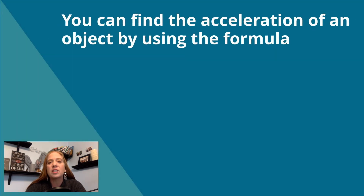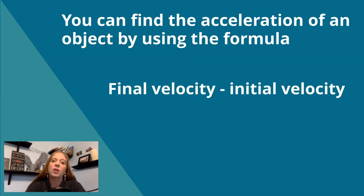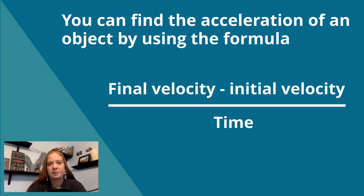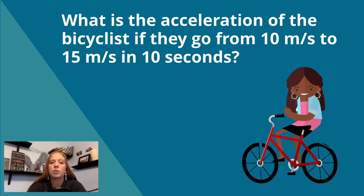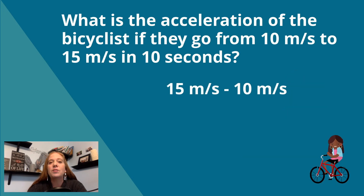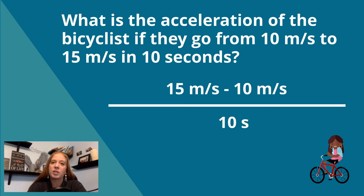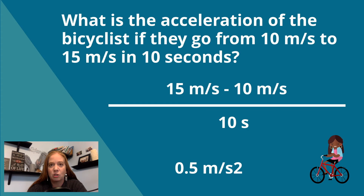You can find the acceleration of an object by using the formula: final velocity minus initial velocity, all over time. What is the acceleration of the bicyclist if they go from 10 meters per second to 15 meters per second in 10 seconds? It's 15 meters per second minus 10 meters per second, all over 10 seconds, which gives you 0.5 meters per second squared.